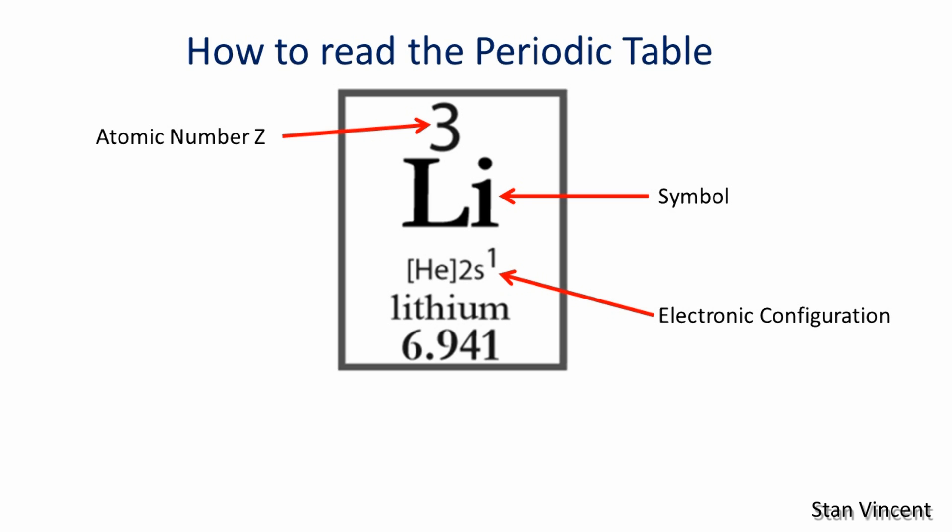The third aspect you see here is the electronic configuration written using the quantum mechanical model or using quantum numbers. All periodic tables may not have it, but this is what it means: the number of electrons in the valence shell is represented here.